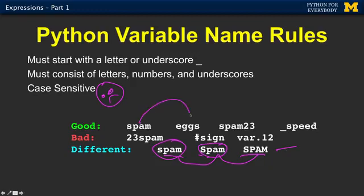But we have some good ones, spam, egg, spam 23. Numbers are fine. It's fine to start with an underscore. It's bad to start with a number. You can't use characters other than letters and numbers in the variable. And so those are all good variable names.